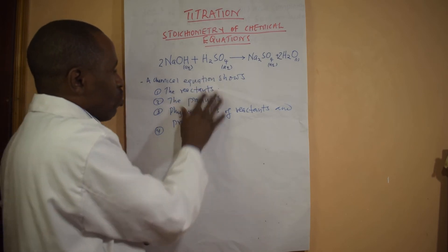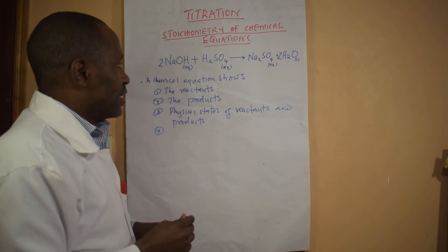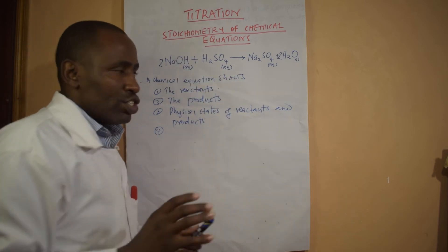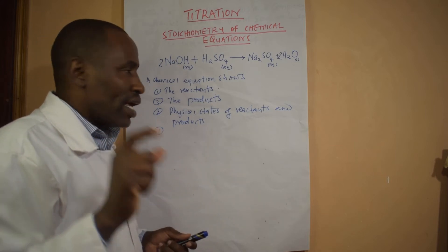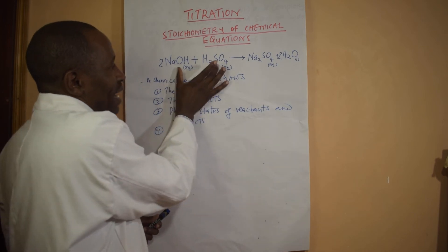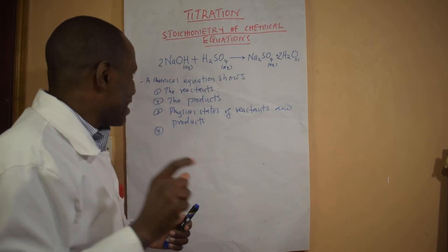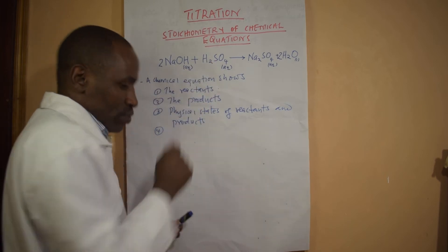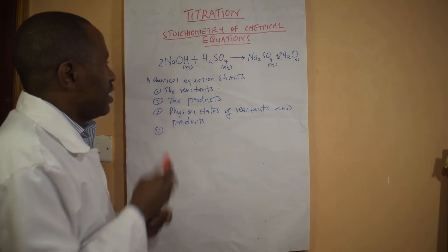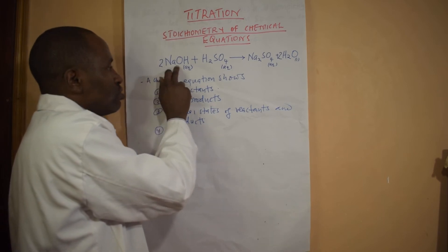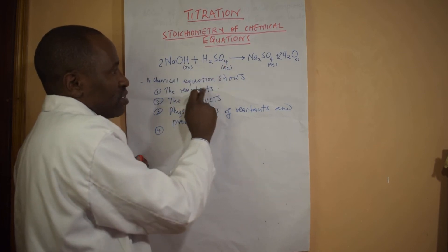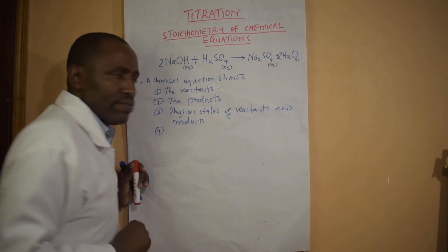Besides those, there is another aspect I'm calling stoichiometry. Any balanced equation will bring the quantitative aspect — it will bring that quantitative relationship between the reactants and the products formed. If you look at the equation here, you can see I have two sodium hydroxide plus one sulfuric acid. I can talk about two molecules of sodium hydroxide reacting with one molecule of sulfuric acid, forming one molecule of sodium sulfate and water.